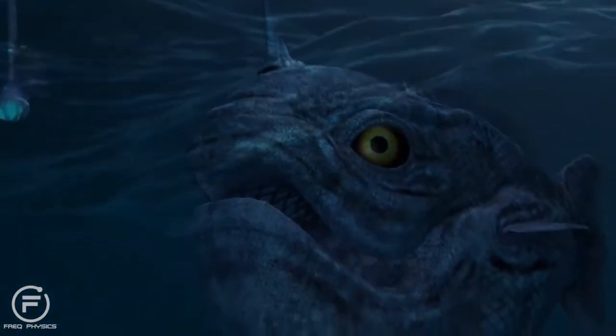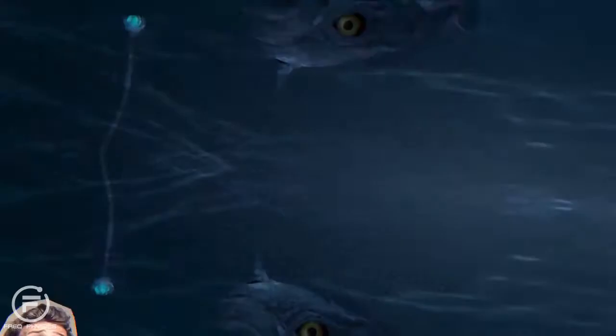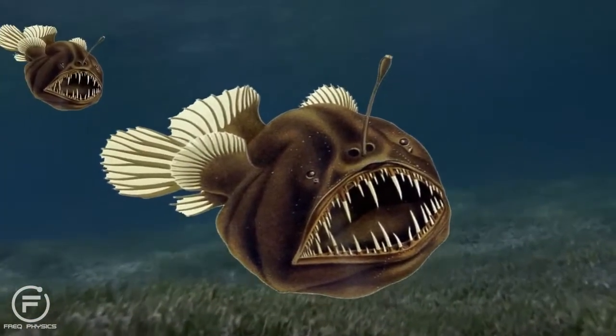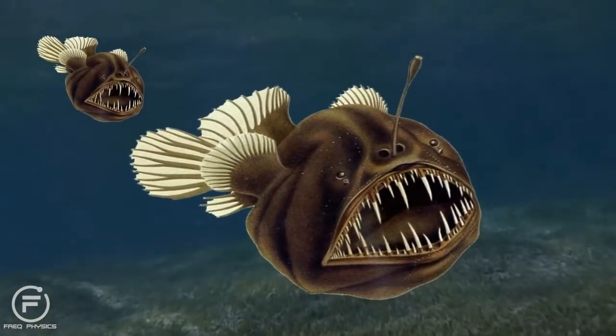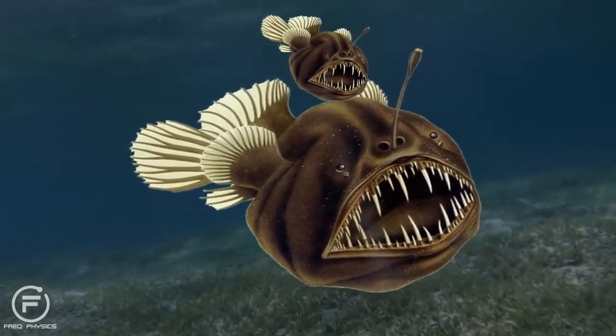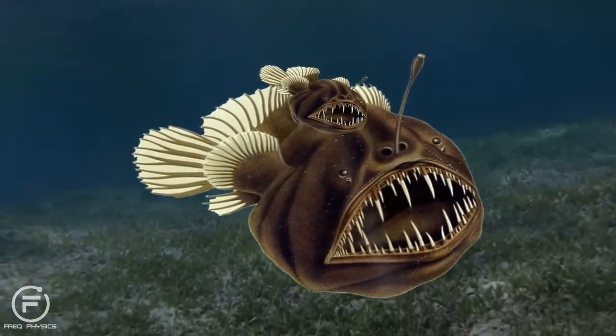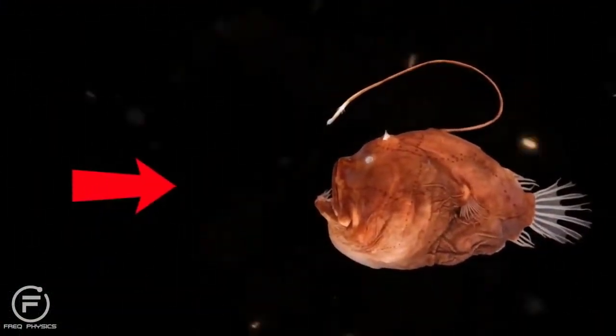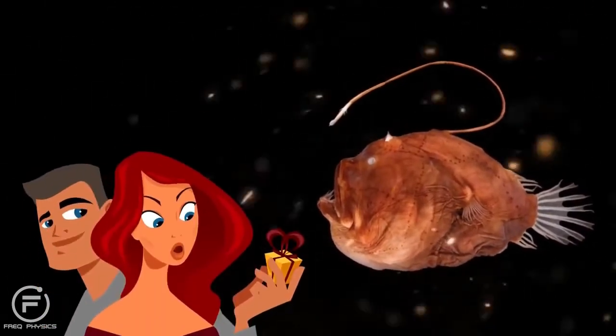The deep-sea anglerfish has a really odd mating ritual. The male is incomparably smaller than the female and lives for the sole purpose of delivering sperm. Afterward, the male bites into the female so hard that he soon becomes a permanent part of her body, just like a parasite. Jeez, talk about a clingy boyfriend.